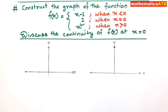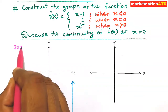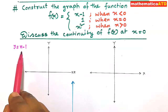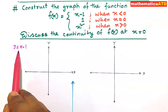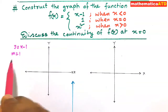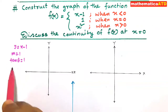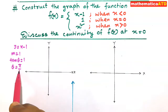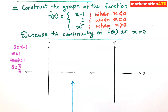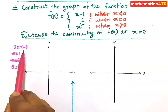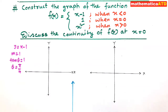First of all, f(x) = x minus 1 is actually a straight line. We can write it as y = x minus 1. This is a straight line whose slope m is equal to 1. That means tan(θ) = 1, which means θ = π/4. That means the line will make 45 degrees with the positive direction of the x-axis, and its y-intercept is negative 1, passing through the point (0, -1).